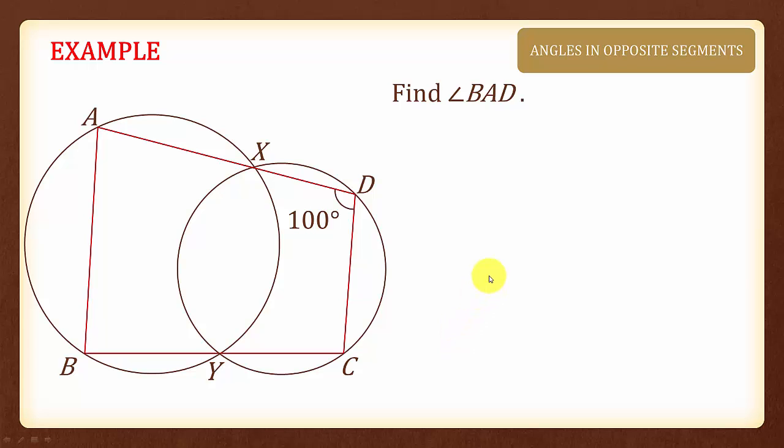Let's look at an example. We are asked to find angle BAD. To do so, we shall join the points X and Y so that we form two quadrilaterals here.